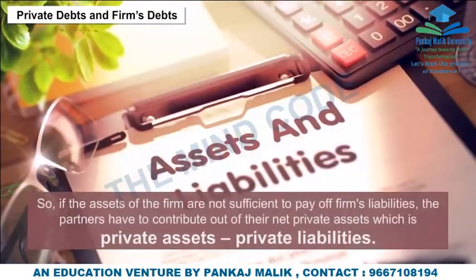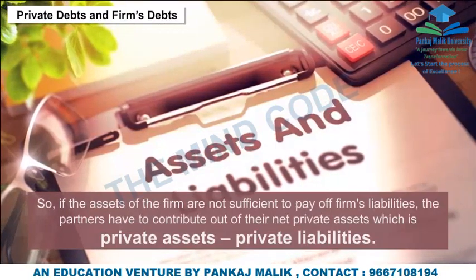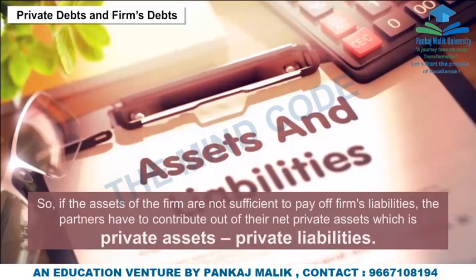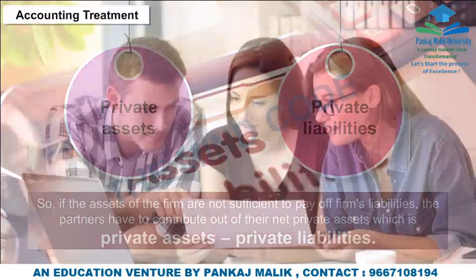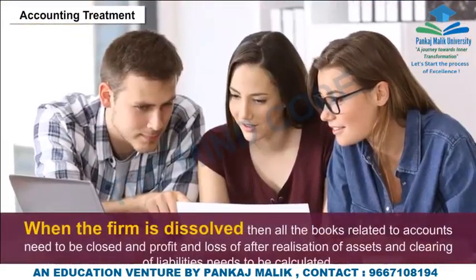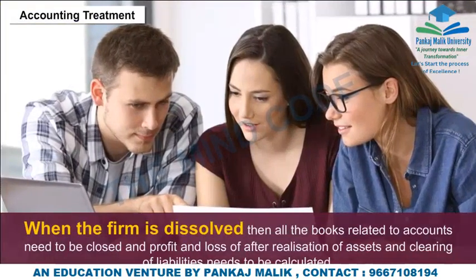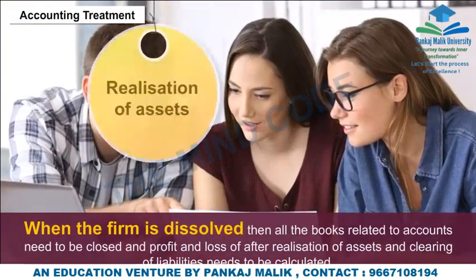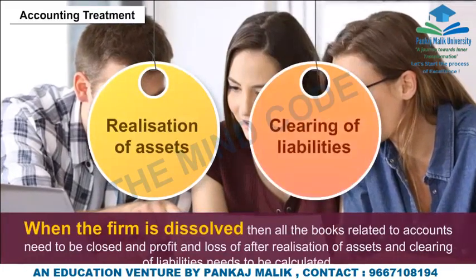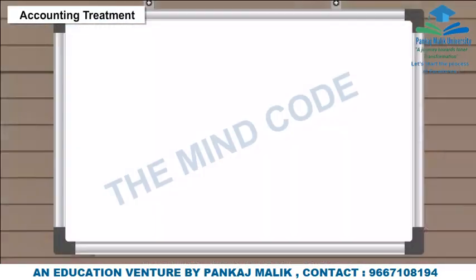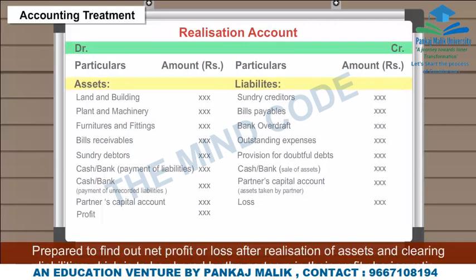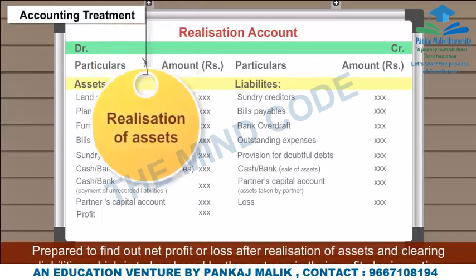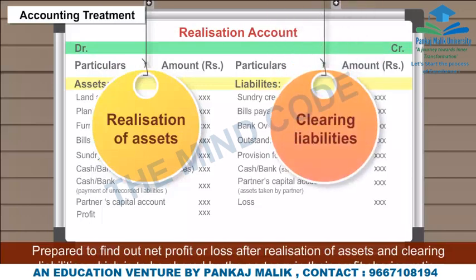If the assets of the firm are not sufficient to pay off the firm's liabilities, the partners have to contribute out of their net private assets — that is, private assets minus private liabilities. Accounting Treatment: When the firm is dissolved, all books related to accounts need to be closed, and the profit or loss after realization of assets and clearing of liabilities needs to be calculated. A realization account is prepared to find out the net profit or loss after realization of assets and clearing liabilities, which is to be shared by the partners in their profit-sharing ratio.